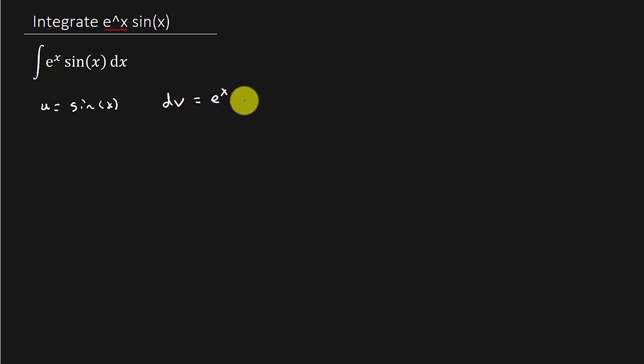what you want to do is you want to let u equal sine x, and we're going to let dv equal e to the x dx. All right, so we know du is equal to cosine x dx, and v is e to the x.